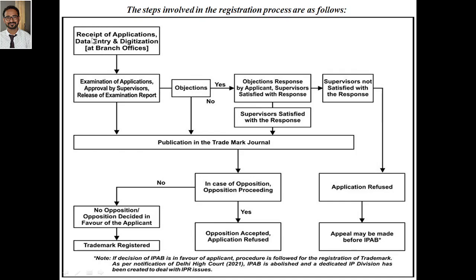Once you apply, they will receive your application, do data entry and digitization — all these things happen at the branch offices. Once the application is filed, examination of the application takes place. It is slightly different from patents; here it goes directly to examination and approval by supervisors, followed by a release of the examination report. Once the examination report is out, two things can happen: either there will be objections or there will not be objections.